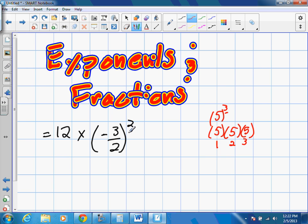Okay, so since this is a fraction to the exponent of 2, it's going to be the fraction times itself 2 times. So we write it out once, negative 3 over 2 times negative 3 over 2.